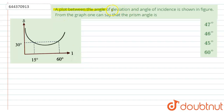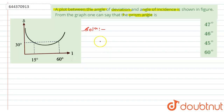The question is: a plot between the angle of deviation and angle of incidence is shown in a figure. From the graph, one can say that the prism angle is — let's see the solution. We are given a graph between angle of deviation and angle of incidence for the ray, and we have to find the angle of the prism.